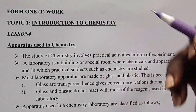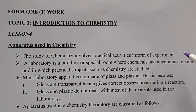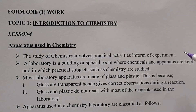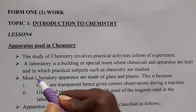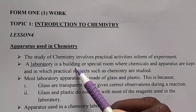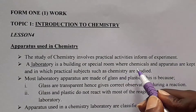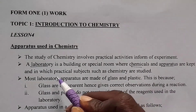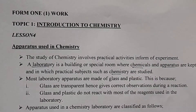The study of chemistry involves practical activities in the form of experiments. Previously we said there are some skills that you acquire in learning chemistry, and one of those was carrying out experiments. Those experiments are done in the laboratory. So, what is a laboratory? A laboratory is a special room or building where chemicals and apparatus are kept, and in which practical subjects such as chemistry, biology, and physics are studied.